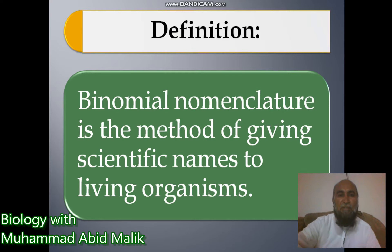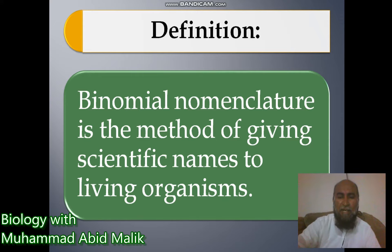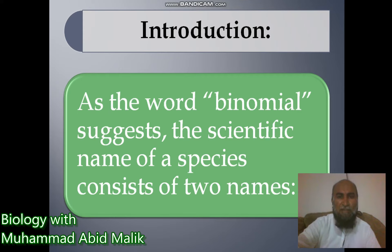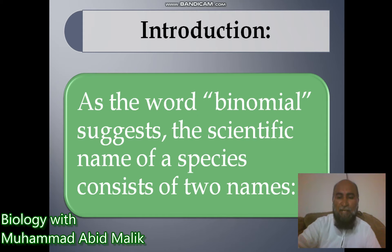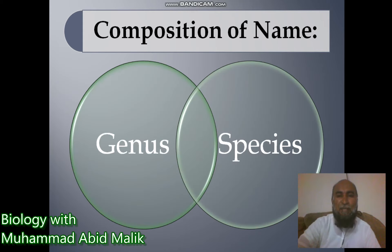First, we try to understand the definition of binomial nomenclature. Binomial nomenclature is the method of giving scientific names to living organisms. As the word expresses itself, it is based on two names — one name from genus and a second name from species.